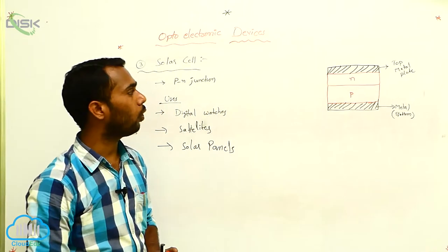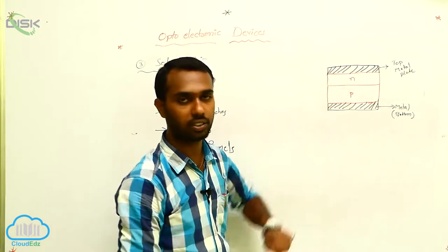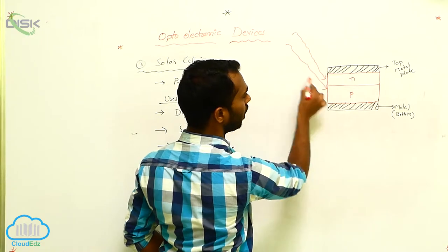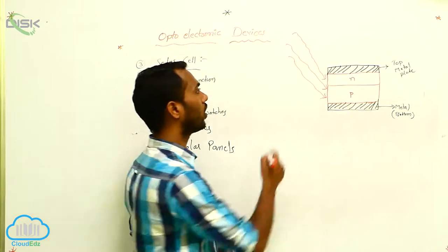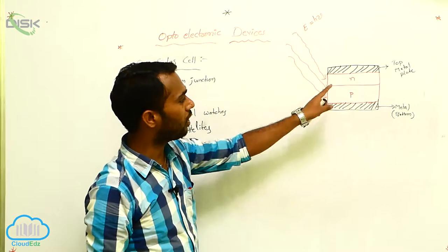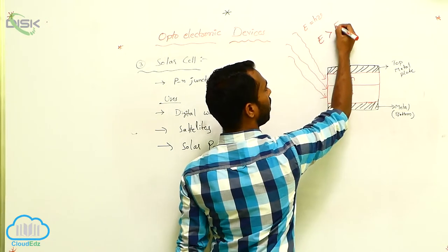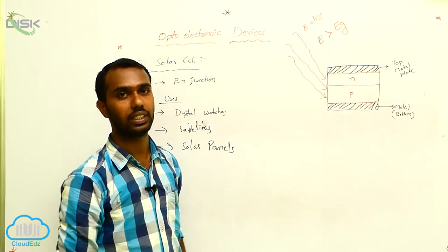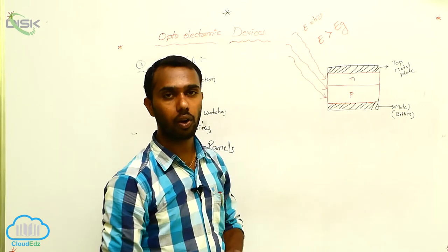We allow solar energy to be incident on this PN junction diode. Sunlight has energy E = Hν. This PN junction diode has some energy gap. If E is greater than the energy gap — if the incident light has more energy — then electron-hole pairs are produced.